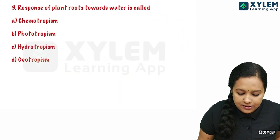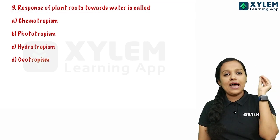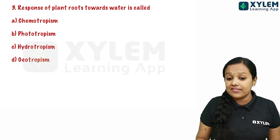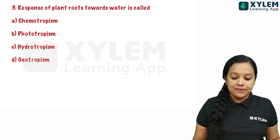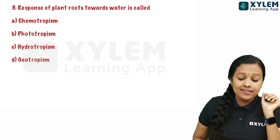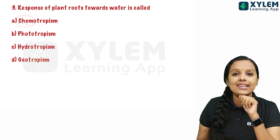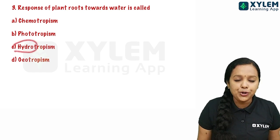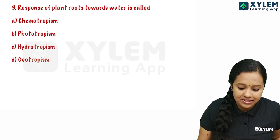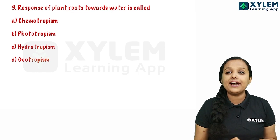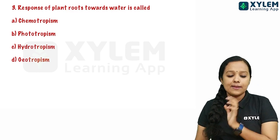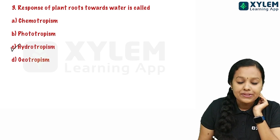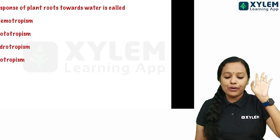Our third question: the response of the plant root towards water is called — the options are chemotropism, phototropism, hydrotropism, and geotropism. The correct answer is hydrotropism.